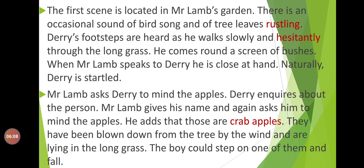Now I will read the paragraph. The first scene is located in Mr. Lamb's garden. There is an occasional sound of birdsong and tree leaves rustling. Derry's footsteps are heard as he walks slowly and hesitantly through the long grass. He comes round a screen of bushes. When Mr. Lamb speaks to Derry, he is close at hand. Derry is startled. Mr. Lamb asks Derry to mind the crab apples blown down from the tree by the wind, as the boy could step on one and fall.